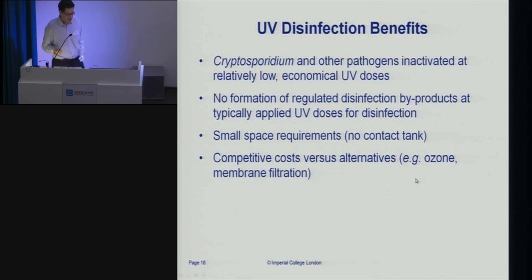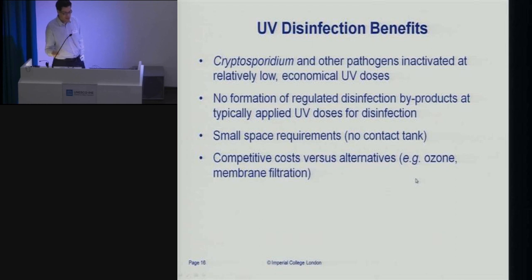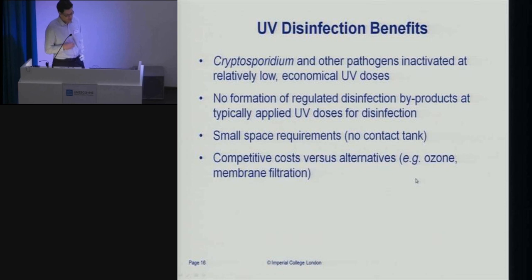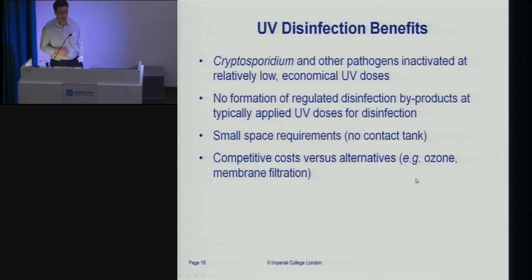From a developing country context, the key limitation is probably that there's no residual disinfecting capability. If you put a UV system into a community but people fill up their water in a completely contaminated bucket, the UV is not providing any protection beyond the point of treatment — whereas something like chlorine provides a degree of treatment during storage of the water. The design and operation of UV reactors also have to account for relevant water quality factors and should include some type of dose validation and monitoring strategy.